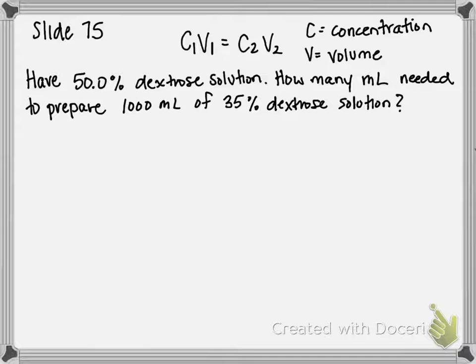We're going to be using the dilution equation in this calculation, which states that C1 times V1 is equal to C2 times V2. C stands for concentration, which can be either in units of molarity or percent concentration like we have here. V stands for volume, which can be in any unit of volume, milliliters or liters.